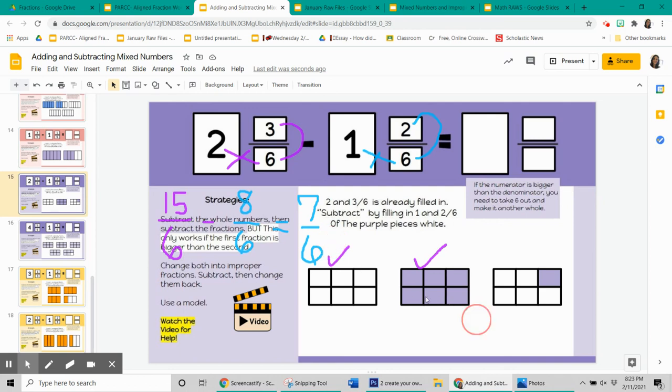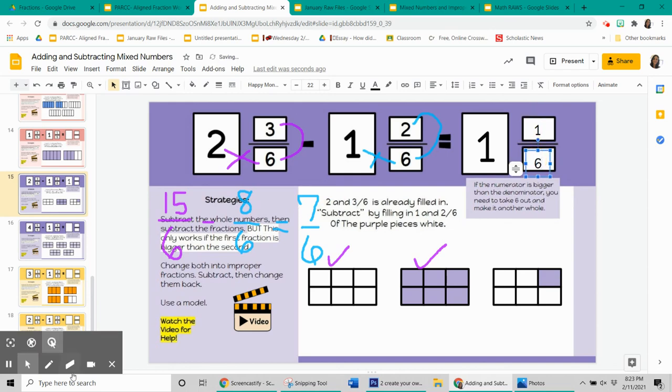So you need to write it as 1 and something else. So with 7 sixths, how many groups of 6 can you make? 1. And then how many sixths do you also have left over? 1. So we have 7 sixths, or 1 and 1 sixth.